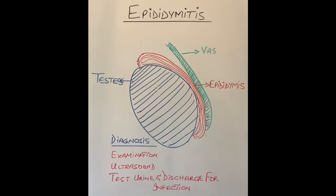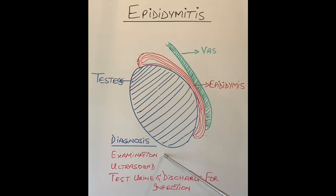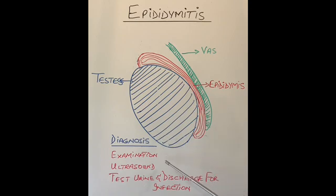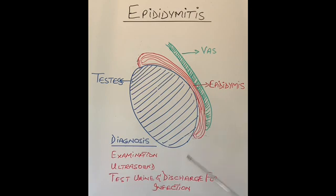How is epididymitis diagnosed? The diagnosis is reasonably straightforward. Examination of the scrotum and the testicle will show the testicle is swollen and quite painful to touch, especially the epididymis is quite painful to touch. If in doubt whether this is because of infection or because of a twist on the testicle — for which you can watch my previous videos — then an ultrasound scan will quickly confirm the diagnosis. To see what is causing the infection, which kind of bacteria is causing it, a urinary test for infection and also testing the discharge from the penis for certain types of infection like sexually transmitted infections will confirm the diagnosis.